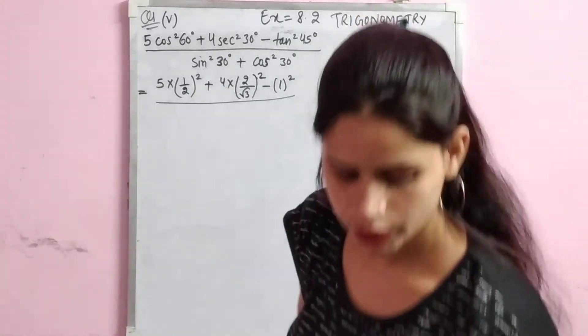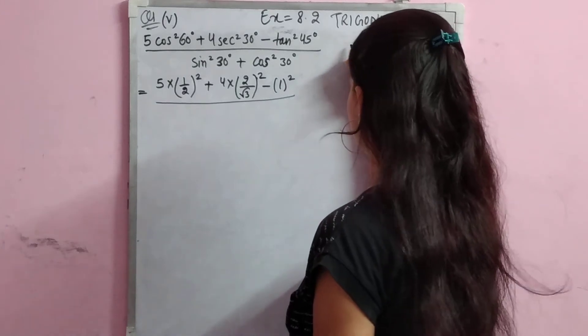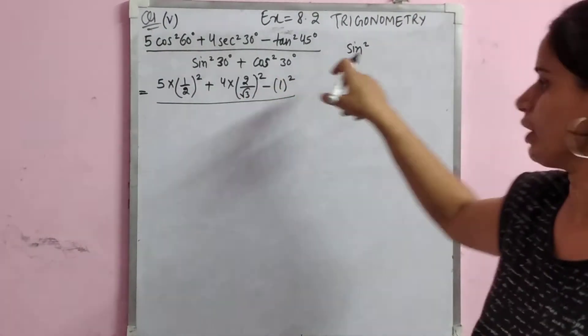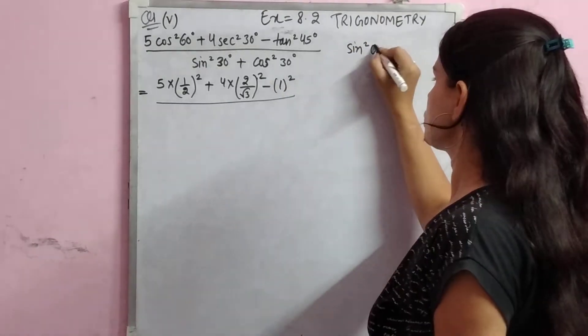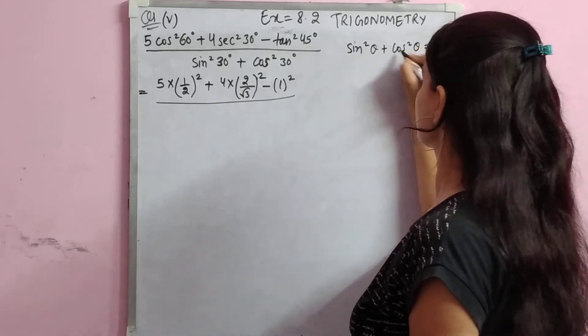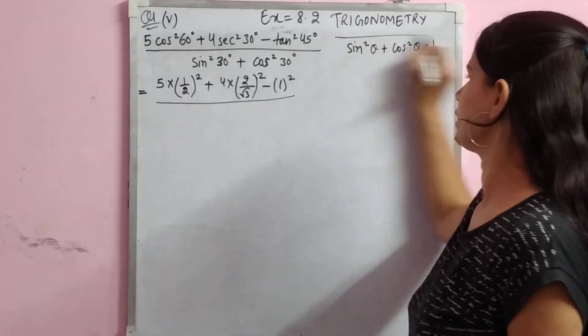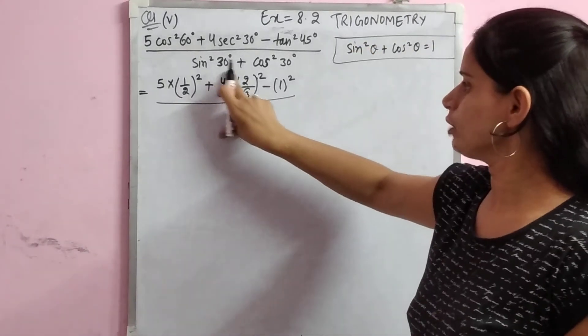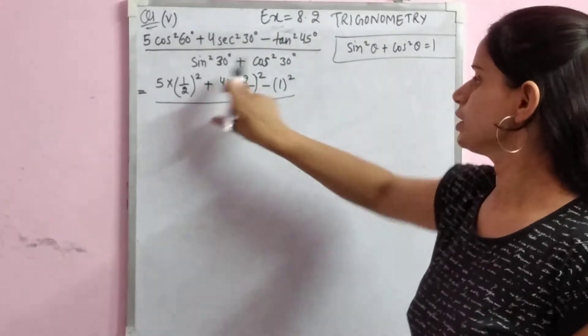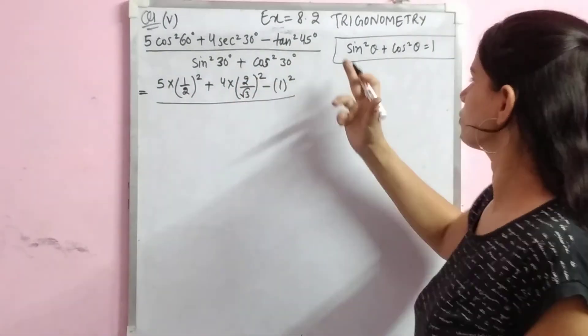Let's look at the denominator. There is an identity: sin² theta plus cos² theta equals 1. The theta should be the same, the angle should be the same. Here we have sin² 30° and cos² 30°, so both angles are the same at 30 degrees. This means the denominator value is easily 1.